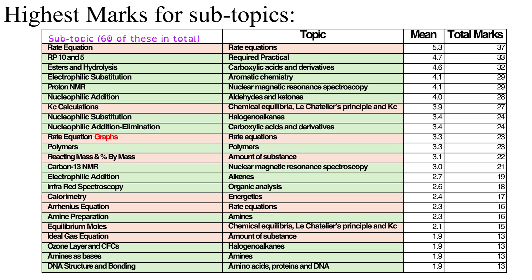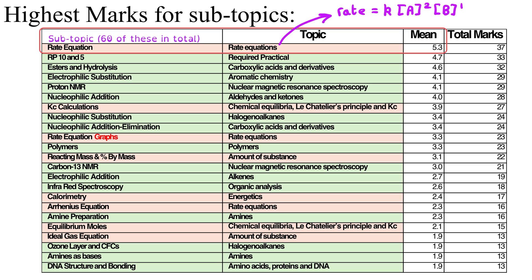Some of these topics are really large, so it's worth knowing which subtopics get prioritised more on average. The most-assessed subtopic is the rate equation itself — working out the order with respect to a particular concentration, or doing calculations about the units of the rate constant — coming up with an average of 5.3 marks per paper. Not too far behind are the required practicals: making an organic compound (Required Practical 10) and separating it out (AS Required Practical 5). Esters is the biggest subtopic within carboxylic acids, then electrophilic substitution of benzenes, and proton NMR specifically comes in fifth place.